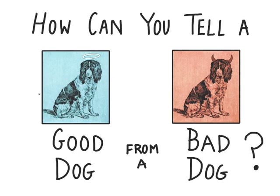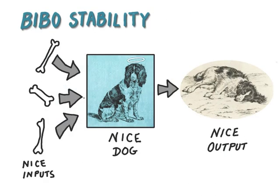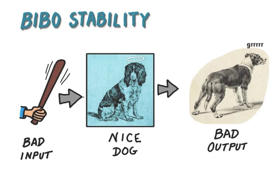How can you tell a good dog from a bad dog? You could look for the horns or the halo, but I'm looking for something that is more input-output than that. For the nice dog, if I give it a nice input — say some juicy bones — I will get a nice output. The dog might wag its tail or take a nap. But if I take the nice dog and give it some sort of bad input, I can expect some sort of bad output — I might even get bitten. If I looked at this bad behavior, I might think the nice dog wasn't a nice dog, but of course it is — it is just responding to a bad input.